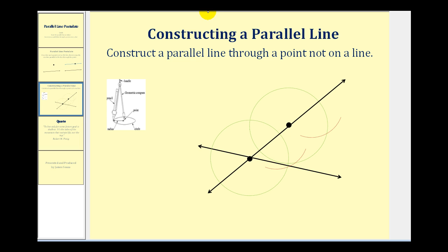Now we're going to take the point of the protractor and put it right here on the intersection of the two lines, and make sure that it opens so that the pencil of the protractor does not extend past our given point. We're going to swing an arc that intersects these two lines, like this.